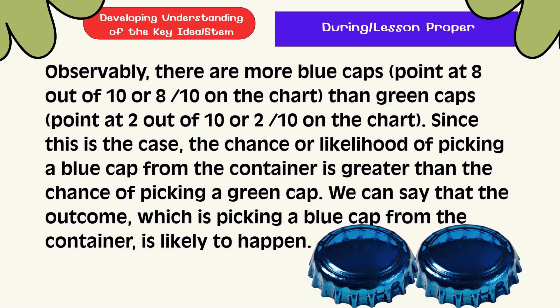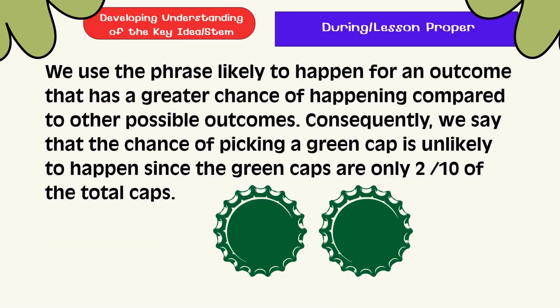Observably, there are more blue cups — 8 out of 10 or 8 tenths — than green cups — 2 out of 10 or 2 tenths. Since this is the case, the chance or likelihood of picking a blue cup from the container is greater than the chance of picking a green cup. We can say that the outcome, which is picking a blue cup from the container, is likely to happen. We use the phrase 'likely to happen' for an outcome that has a greater chance of happening compared to another possible outcome. Consequently, we say that the chance of picking a green cup is unlikely to happen, since the green cups are only 2 tenths of the total cups.